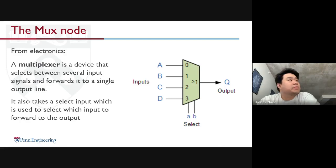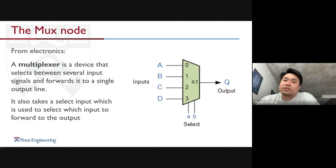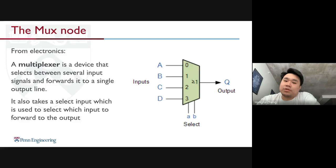The next major part of the simulator is the Mux node. The multiplexer is a concept from electronics — it is a device that selects between several input signals and forwards it to a single output line. It also takes a select input, which is used to select which input to forward to the output.